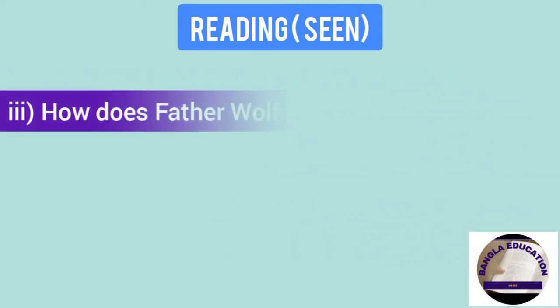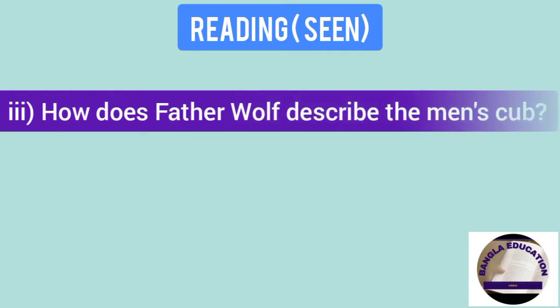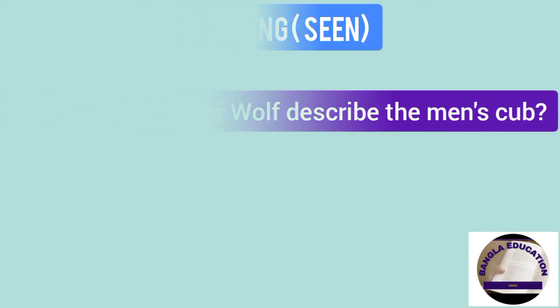Next question is, 3. How does Father Wolf describe the man's cub? So answer is, the baby cannot walk properly. He was standing with a support. He was completely hairless and he has no sense of fear.